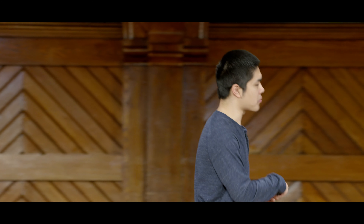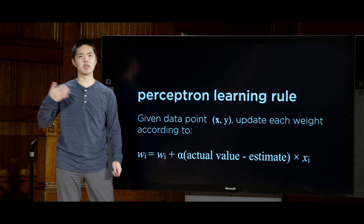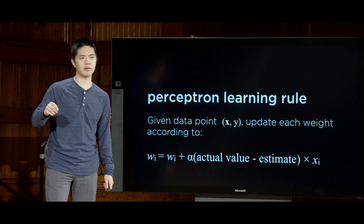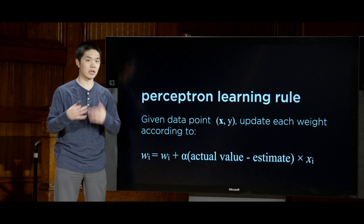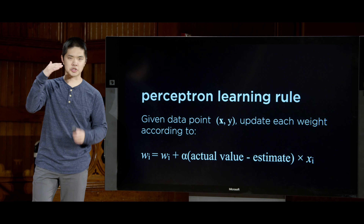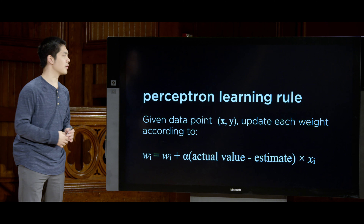The general idea is that every time we encounter some data point, we can adjust these weights to try to make them better line up with the actual data we have access to. You can repeat this process data point after data point until hopefully your algorithm converges to some set of weights that do a pretty good job of figuring out whether a day is going to be rainy or not raining. The value alpha in the update equation is generally what we call the learning rate — a parameter we choose for how quickly we're actually going to be updating these weight values.